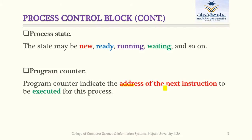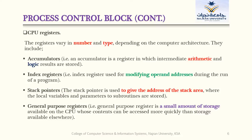The program counter contains the address of the next instruction to be executed for this process. It helps the processor know which instruction to execute next. We also discussed the four main CPU registers: the accumulator, index register, stack pointer, and general purpose registers. The accumulator is used to store intermediate arithmetic and logic results. Index registers are used to modify the operand address. Stack pointers give the address of the stack area. General purpose registers are a small amount of storage available on the CPU.